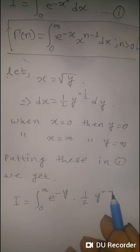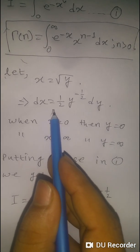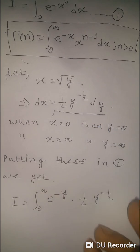The dx term becomes half of y to the power negative half dy.